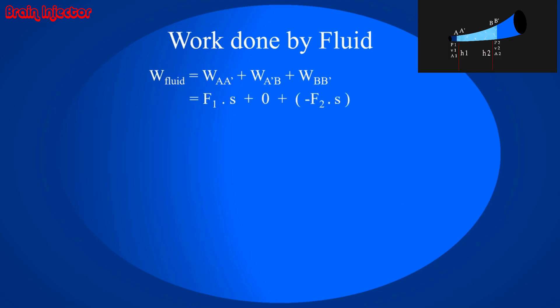Work done from A to A dash is the dot product of force and displacement. The force F1 pushes the fluid part making displacement S. Work done from A dash to B is zero because displacement is zero. Work done from B to B dash is the dot product of force and displacement. The force F2 pushes the fluid part making displacement S. Now we all know that force is pressure times area and displacement is velocity times time difference, which gives us this equation: P1 times A1 times V1 times time difference minus P2 times A2 times V2 times time difference. And finally, delta M by rho times P1 minus P2.